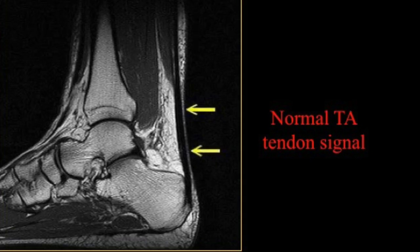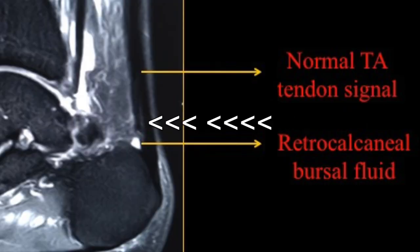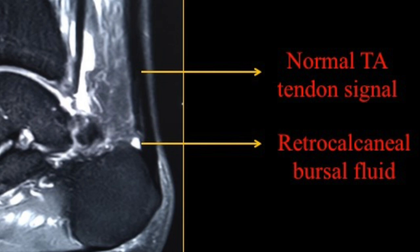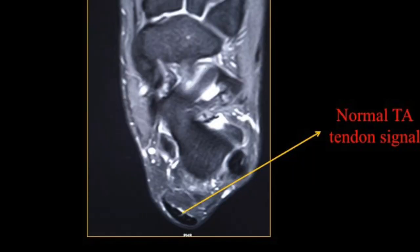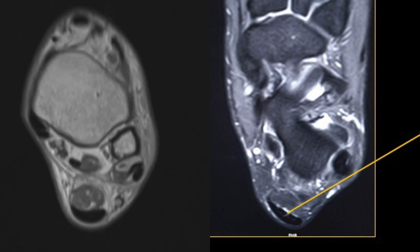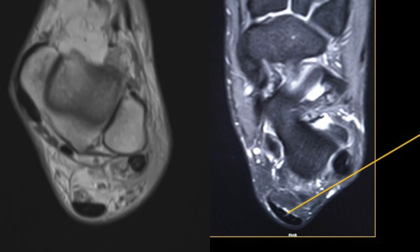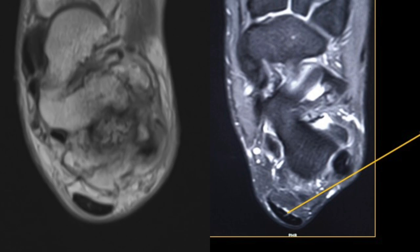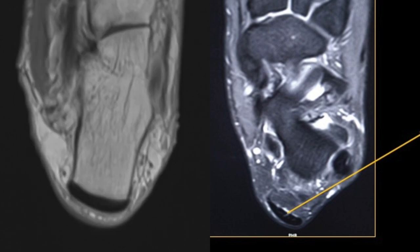This is the normal tendo Achilles in sagittal images — it has a complete dark signal. Here we see a thin intra-substance signal; this is not a tear, this is a normal fascicle. We also see a thin chink of fluid in what we call the true bursa of the ankle, the retrocalcaneal bursa lying anterior to the Achilles. This is the normal tendo Achilles in axial sections — again we see small fascicles which are part of the normal appearance.